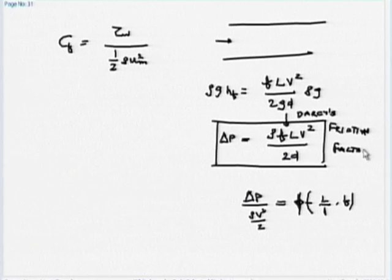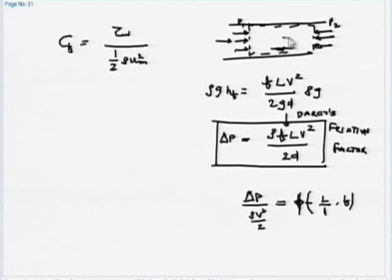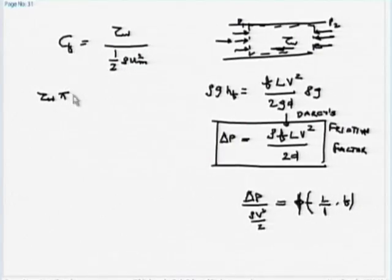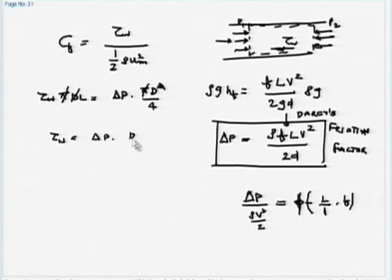To connect Darcy's friction factor with skin friction factor, I take a small control volume in the pipe. Pressure p₁ acts on one side, p₂ on the other, and shear stress τ_wall acts opposite to the flow direction. The force balance gives: τ_wall × πDL = ΔP × πD²/4. Simplifying (pi and D cancel): τ_wall = ΔP × D/(4L).